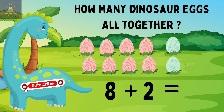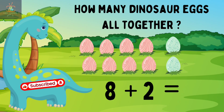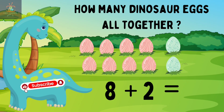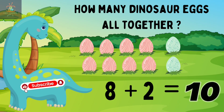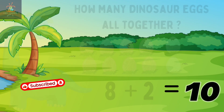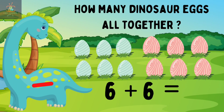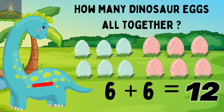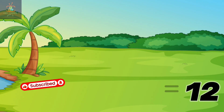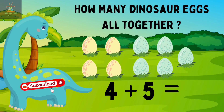Eight pink eggs plus two blue eggs equals ten — ten dinosaur eggs! Six blue eggs plus six pink eggs equals — let's count it all together — 12 eggs!